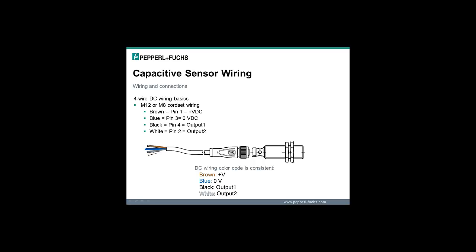When using a 4-wire DC sensor, the connection convention follows the 3-wire connection color code with the addition of the 4th white wire which connects the 2nd output signal. Here you can see that when using a 4-wire cord set, the wiring colors that you connect to use the sensor are brown, blue, black and white.